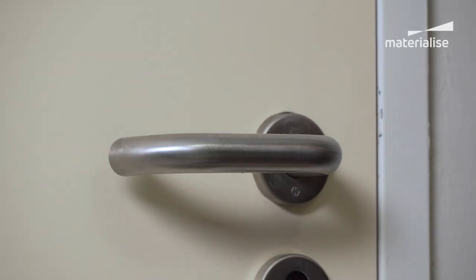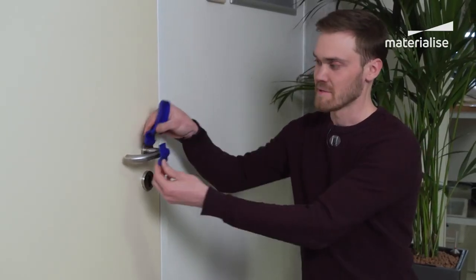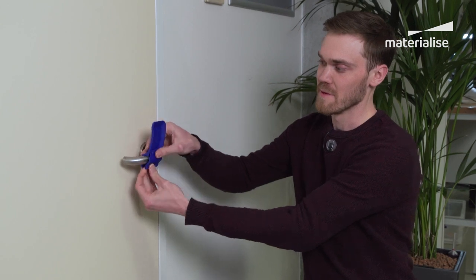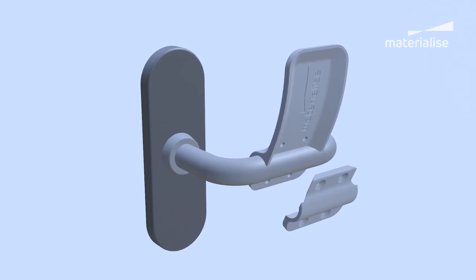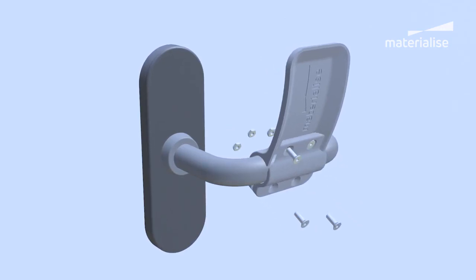Here at Materialise we use this rubber insert to make sure that the door opener isn't rotating around the door handle. To mount the door opener to the door handle we use M4 screws.